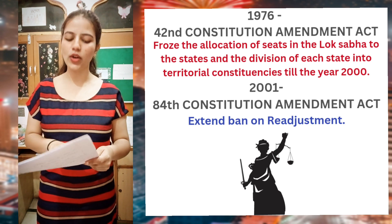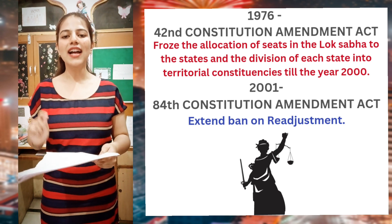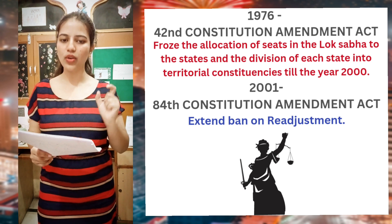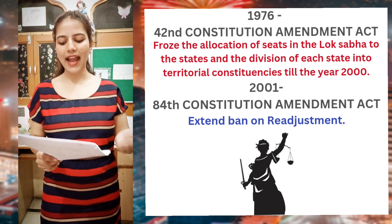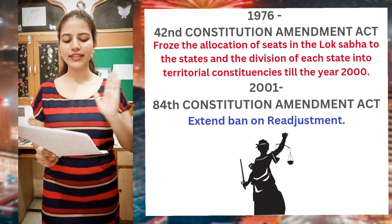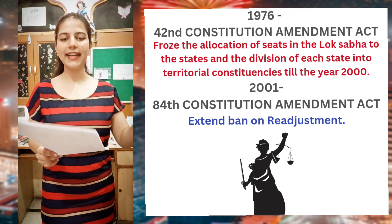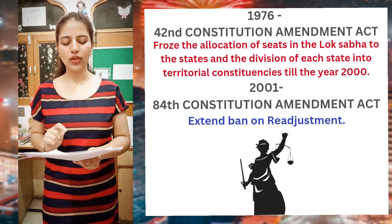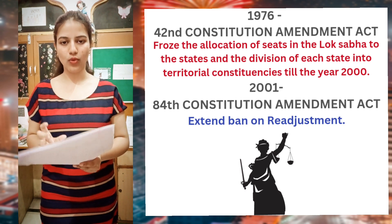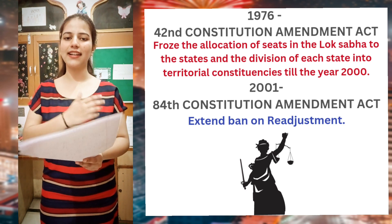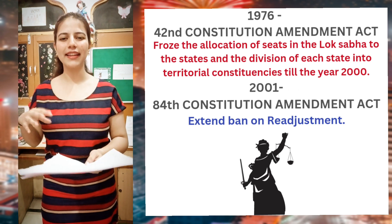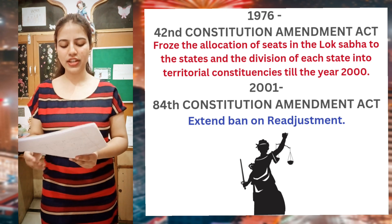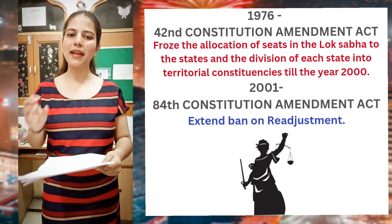Now, in May 1976, the 42nd Constitutional Amendment Act froze the allocation of seats in the Lok Sabha to the states and the division of each state into territorial constituencies till the year 2000. Later on, in 2001, the 84th Constitutional Amendment Act came to extend the ban on re-adjustment. The objective of the 84th Amendment was population-limiting measures.